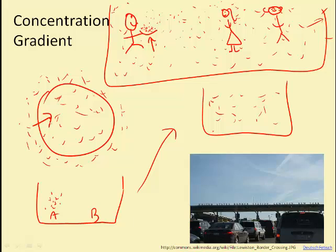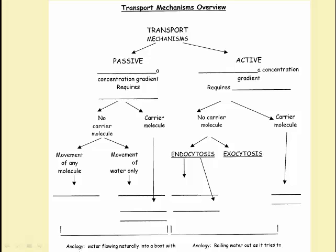Now we're ready to talk about the different transport mechanisms. The transport mechanisms we're going to look at fall into two general categories: passive transport mechanisms, which move down a concentration gradient and require no added energy, and active transport mechanisms, which move materials up or against a concentration gradient — in other words, from an area of low concentration to an area of high concentration — and this requires energy. Let's talk about the passive transport mechanisms first.